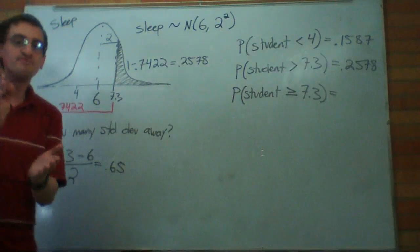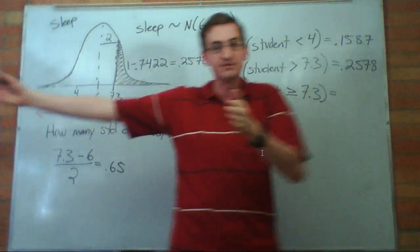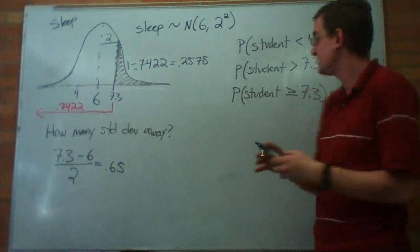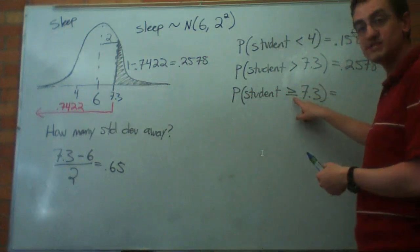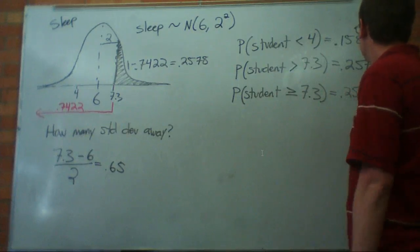Remember, the probability that you get exactly 7.3 amount of sleep, that doesn't happen. There's no probability there. So whether you include 7.3 or not, you get the same answer. This is still 0.2578.